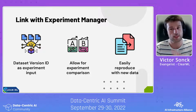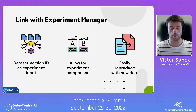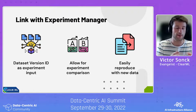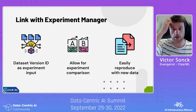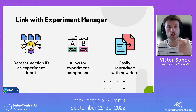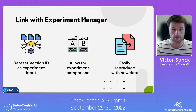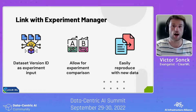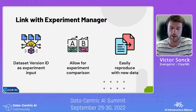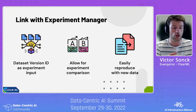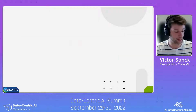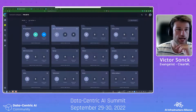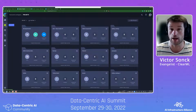We also want to be able to easily reproduce experiments with new data. ClearML has a functionality to take your experiment, clone it, and run that clone again with changed parameters. What's really cool is you can just change the dataset ID and retrain your model with new data in a single click. That's really powerful — adding this link to the experiment manager is basically the definition of data-centric AI, because you're just iterating over your data and it's just two clicks for a new model.